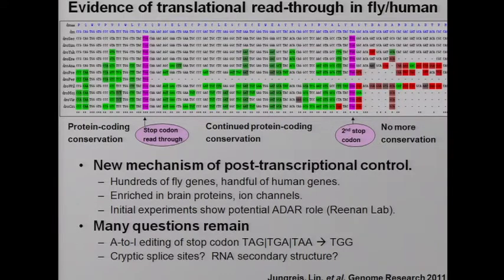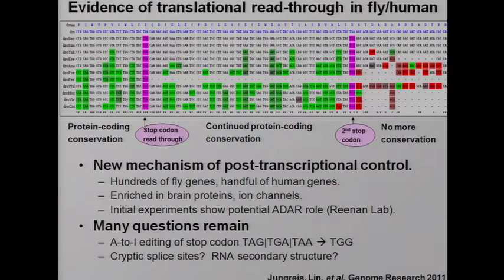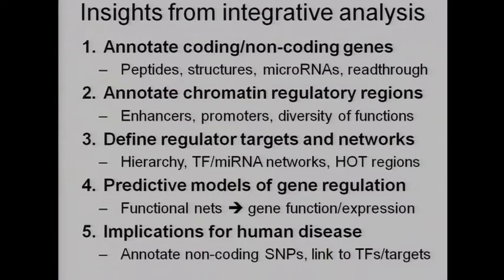You can also discover downstream of conserved stop codons regions of overlapping functions where a region serves as both the 3' UTR of one translation termination region, but also has an alternative translation termination that reads through the stop codon and translates additional regions. We found 300 of those examples in the fly genome and four additional examples in the human genome that started from model organisms before we knew they existed in humans.